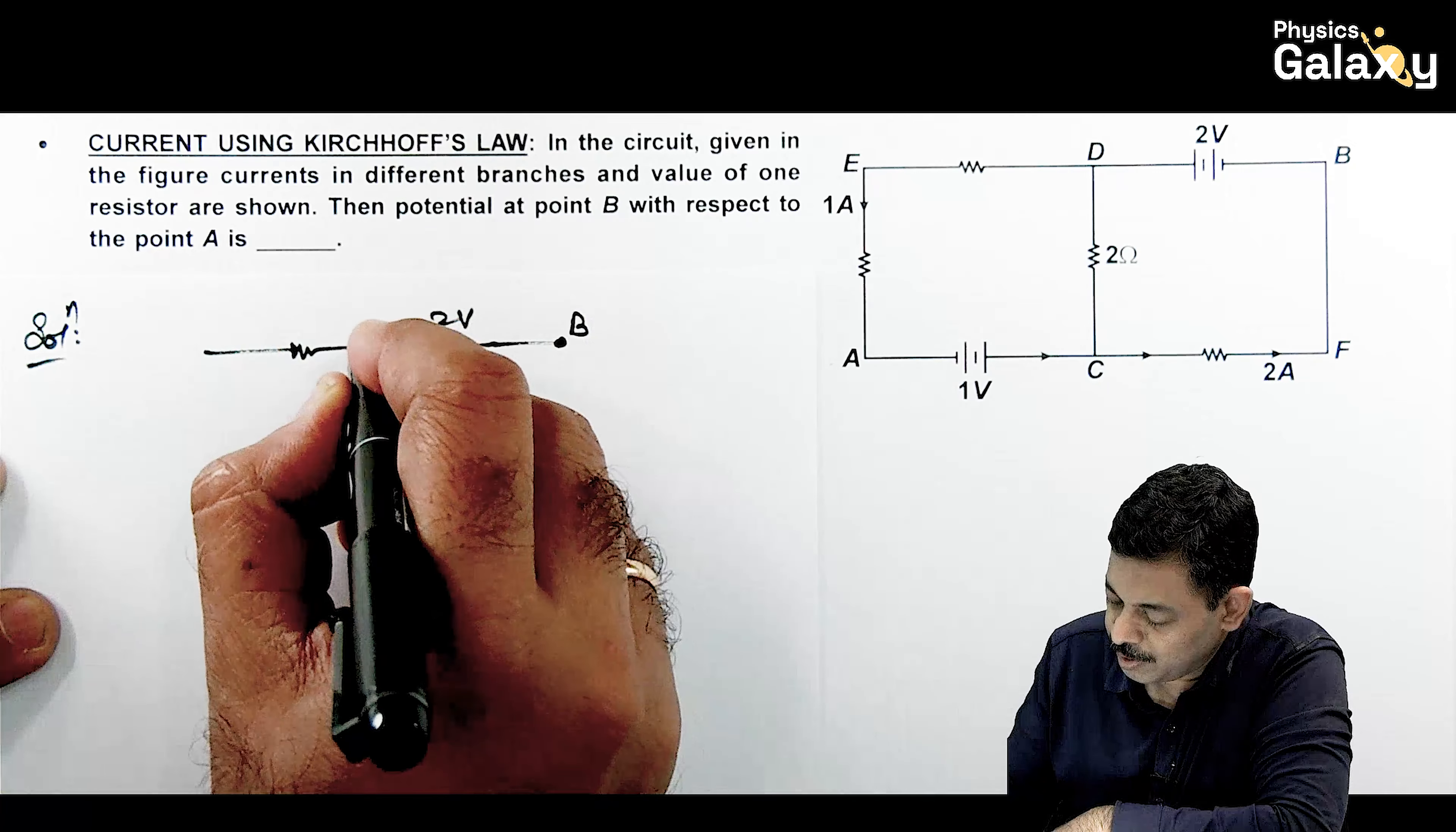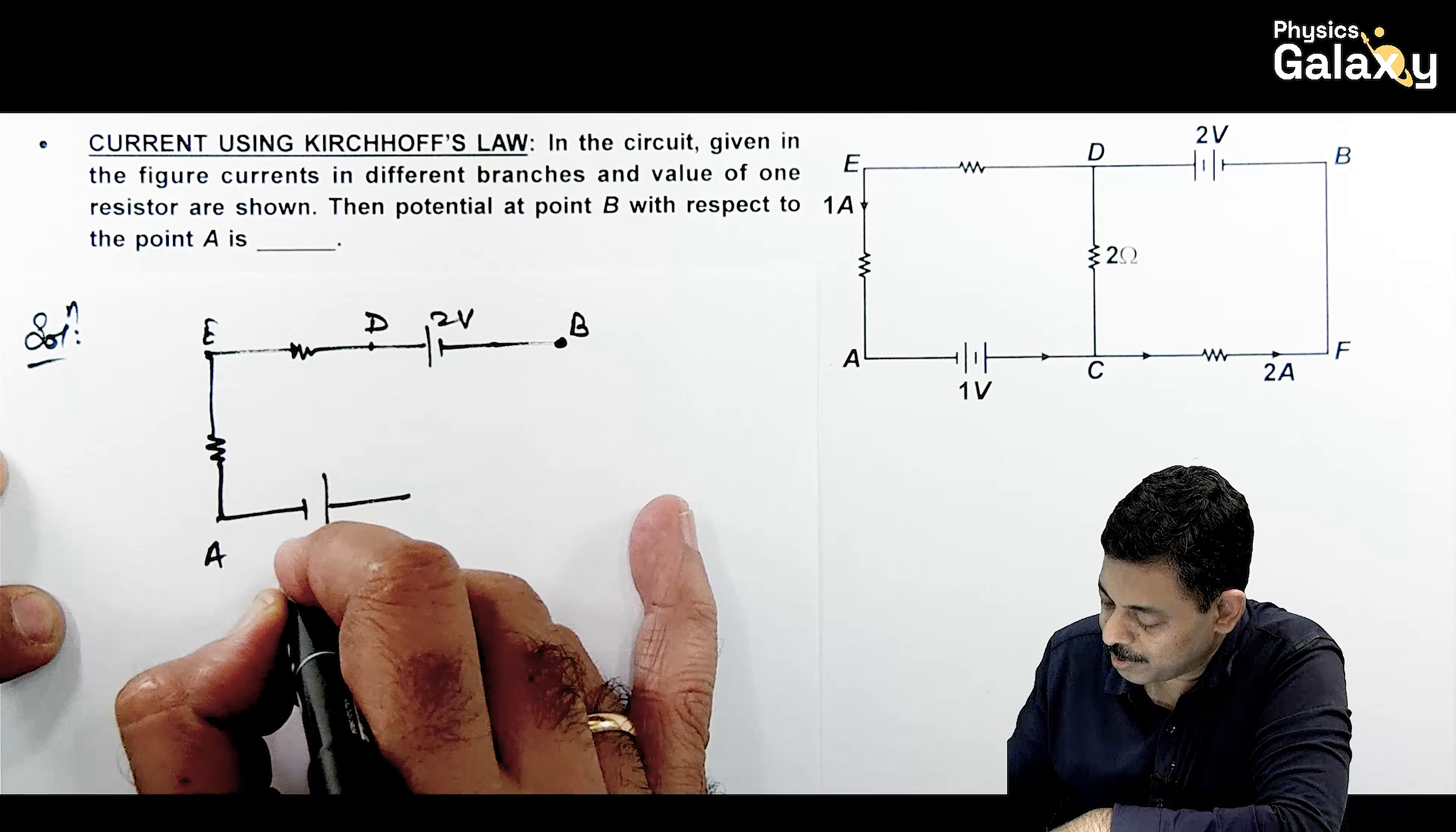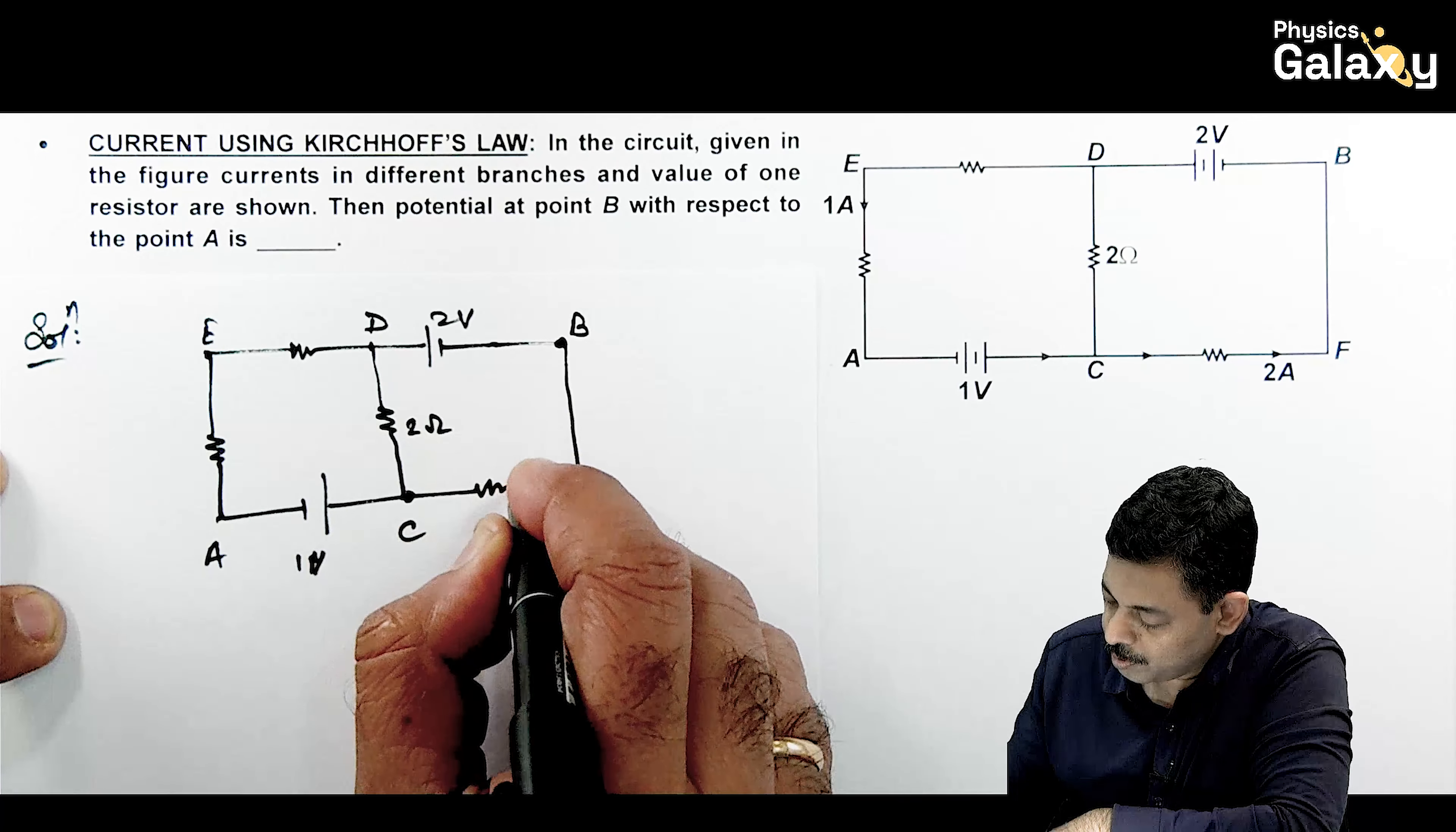If you carefully analyze here, the circuit is given like this. This is a 2 volt battery, this is B, this is D, this is point E. Here there is a resistance connected to terminal A. Here it is 1 volt battery, here it is point C, this is 2 ohms.